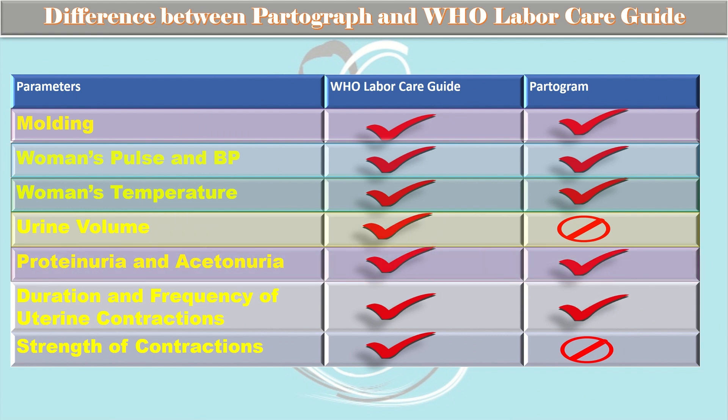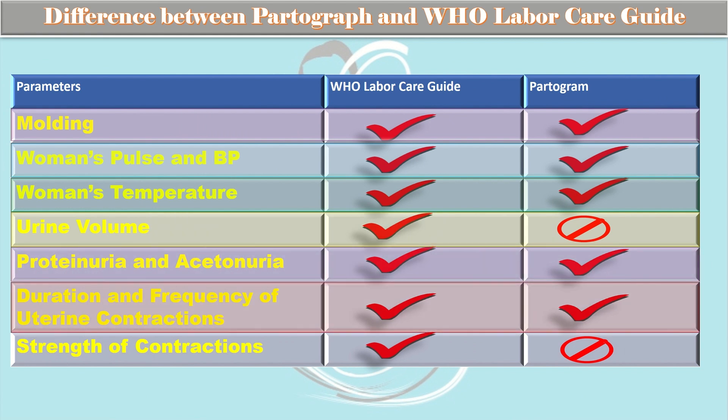Parameters like molding, woman's pulse, temperature, urine proteinuria and acetonuria, duration and frequency of uterine contractions are present in both the partograph and the WHO Labor Care Guide — except urine volume and the strength of contractions, which are not included in the WHO Labor Care Guide. Thank you so much — that was a brief overview of the WHO Labor Care Guide.